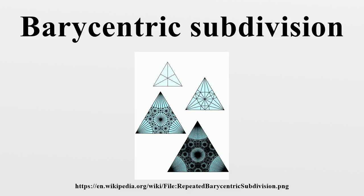Barycentric subdivision of a simplex: the barycentric subdivision of a dimensional simplex consists of simplices. Each piece, with vertices, can be associated with a permutation of the vertices in such a way that each vertex is the barycenter of the points.